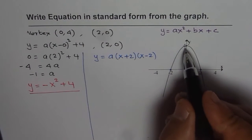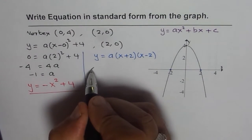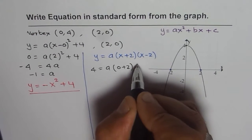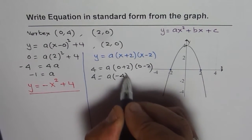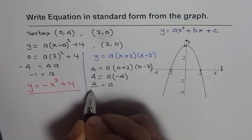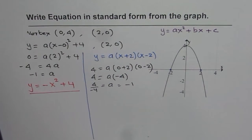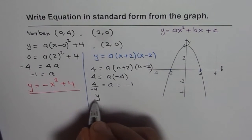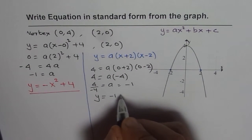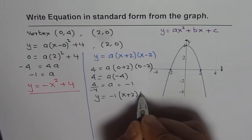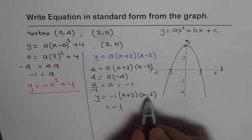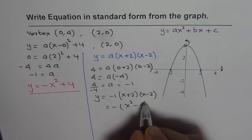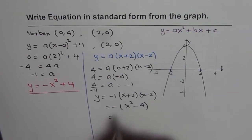Substituting X equals 0 and Y equals 4 into the intercept form equation, we get 4 equals A times (0 plus 2) times (0 minus 2), which gives 4 equals A times minus 4, so A equals 4 divided by minus 4, which is minus 1. Substituting A equals minus 1, the equation becomes minus 1 times (X plus 2)(X minus 2). Expanding using the difference of squares — A squared minus B squared — we get minus X squared plus 4, exactly the same result.